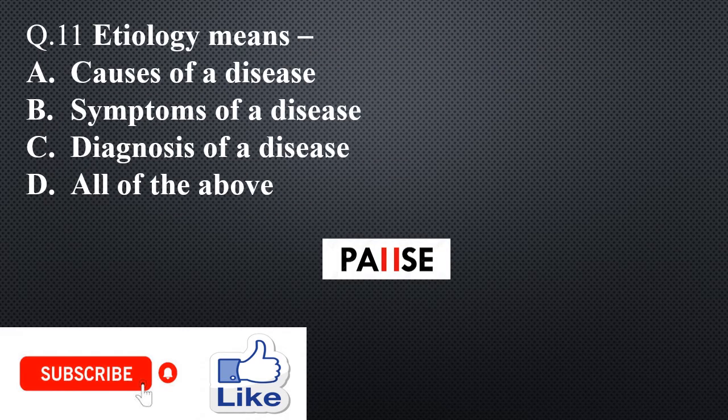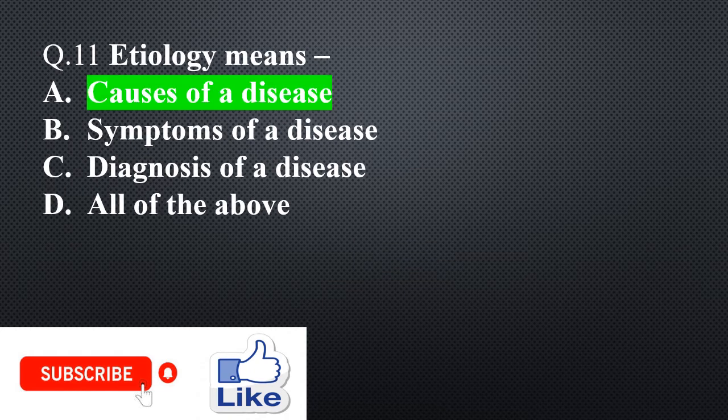Question 11. Etiology means: Option A: Causes of a disease, Option B: Symptom of a disease, Option C: Diagnosis of a disease, Option D: All of the above. The right answer is Option A: Causes of a disease.